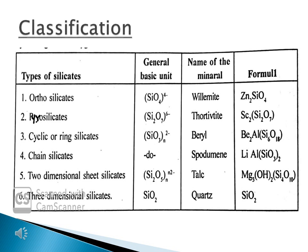The fourth one is chain silicates, with general basic unit (SiO3)ₙ²ⁿ⁻. The mineral is spodumene with formula LiAlSi2O6. The fifth one is two-dimensional sheet silicates, with general basic unit (Si2O5)ₙ²ⁿ⁻. The mineral is talc with formula Mg3(OH)2Si4O10. The sixth one is three-dimensional silicates, with general basic unit SiO2. The mineral is quartz with formula SiO2.